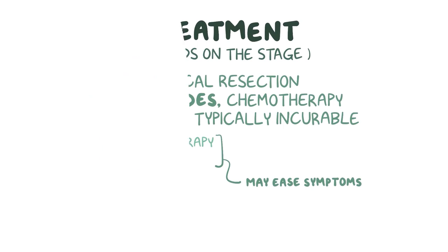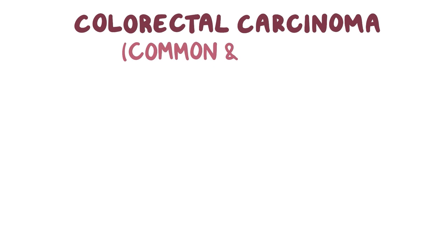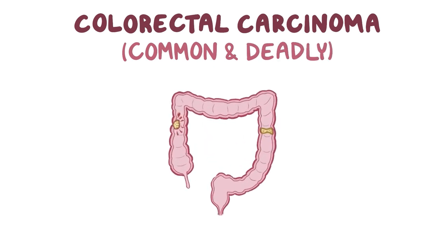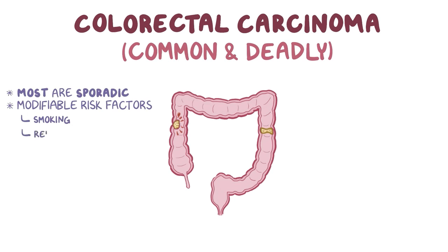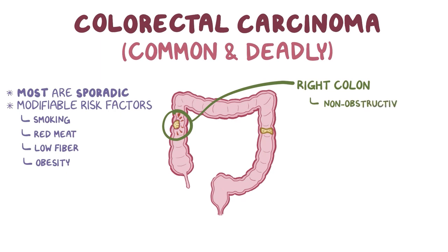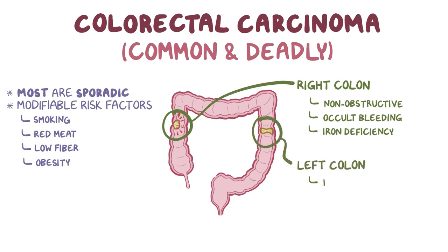As a quick recap, colorectal carcinoma is a very common and deadly cancer that affects the large intestines. The majority of cases are sporadic and do not have a clear cause, but modifiable risk factors include smoking cigarettes, eating a lot of red meat, not eating a lot of fiber, and being obese. Symptoms can vary based on the tumor's size and location. Tumors of the right colon generally don't cause bowel obstruction and instead can cause occult bleeding, which can lead to iron deficiency anemia. Tumors of the left colon, on the other hand, are generally ring-shaped masses, which can cause bowel obstruction with constipation as well as abdominal pain.